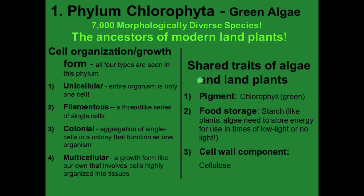The shared traits of algae and land plants: one, they have pigment — some type of chlorophyll, and there are several different kinds. Two, they have food storage using starch — like plants, algae need to store energy for use in times of low or no light, like at nighttime. Three, the cell wall component must be made out of cellulose.